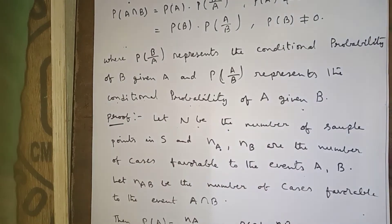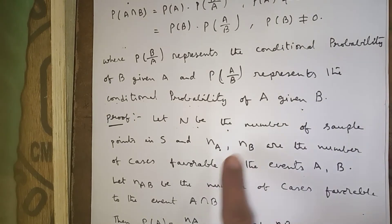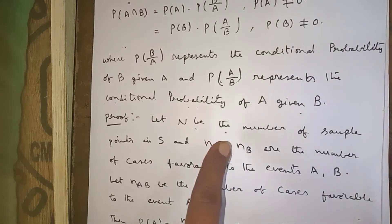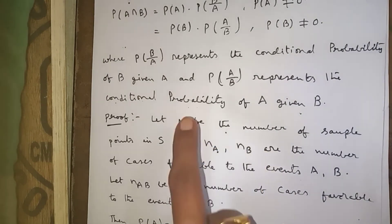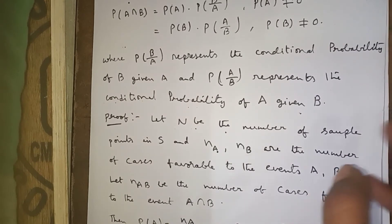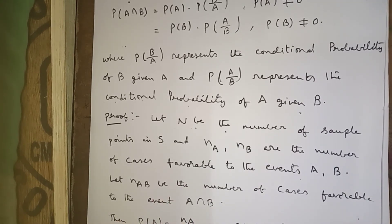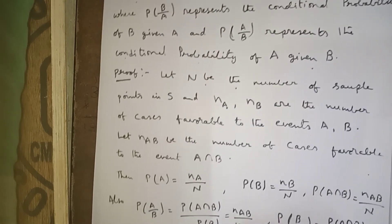Proof: Let capital N be the total number of elementary events in sample space S. Let N_A and N_B be the number of favorable cases of events A and B respectively. Therefore, P(A) = N_A / N, P(B) = N_B / N, and P(A ∩ B) = N_AB / N.